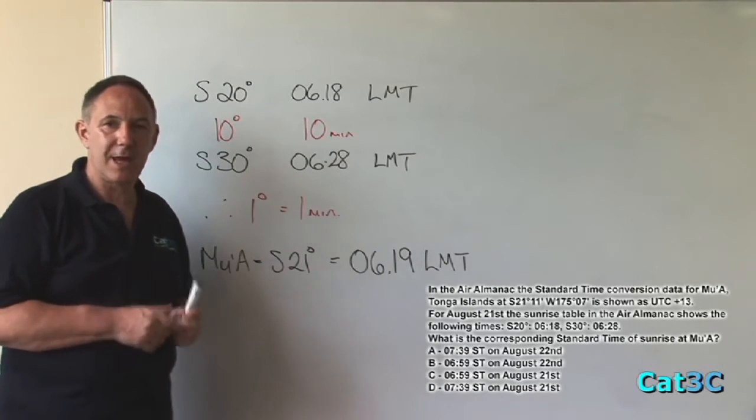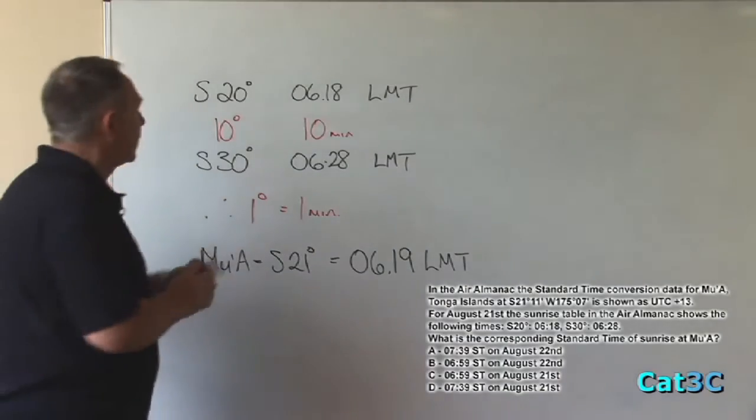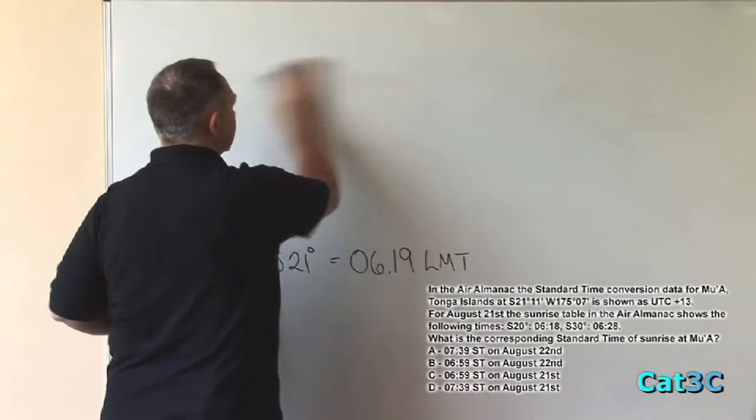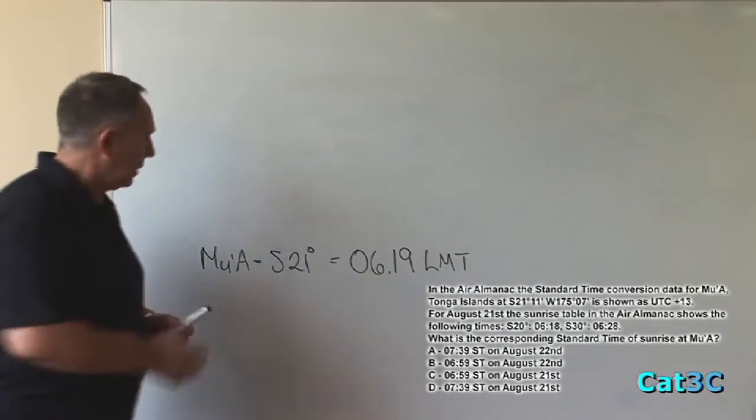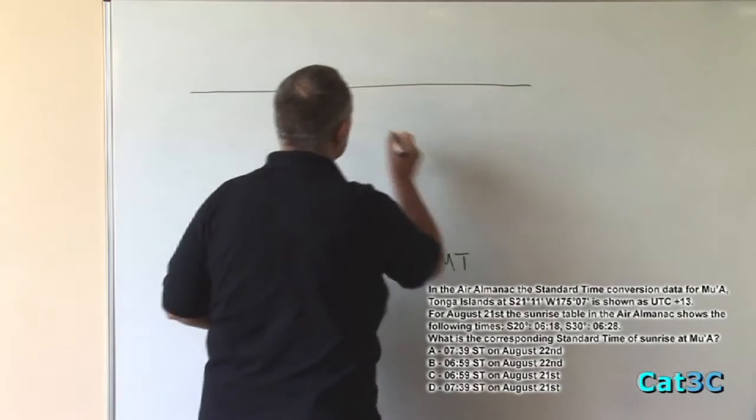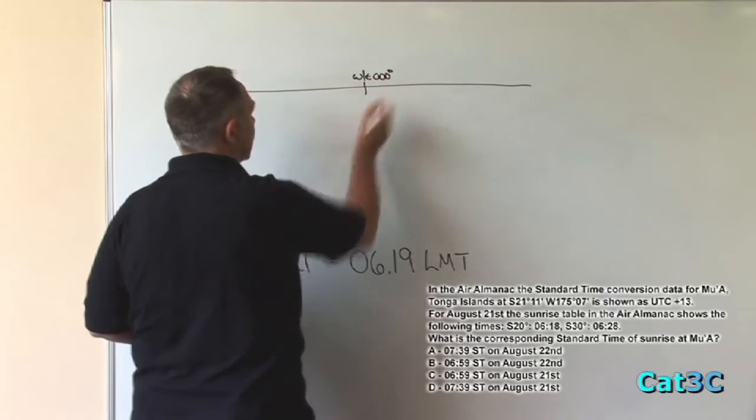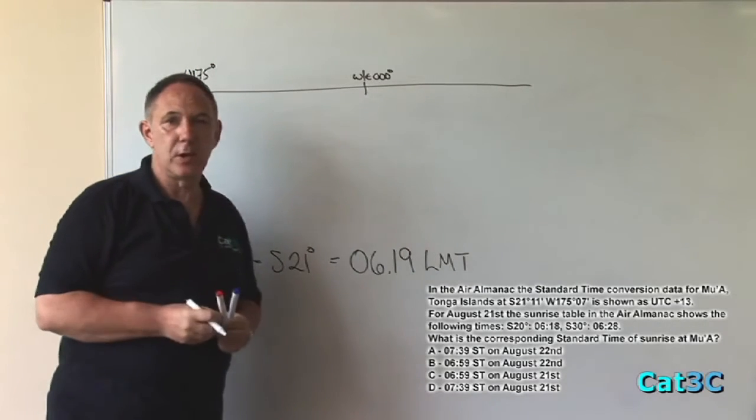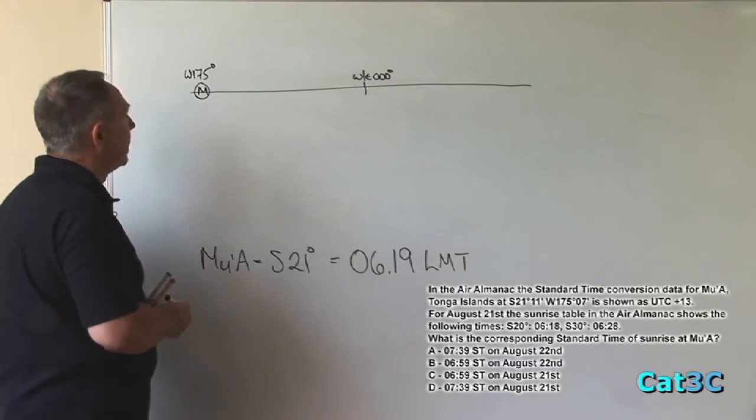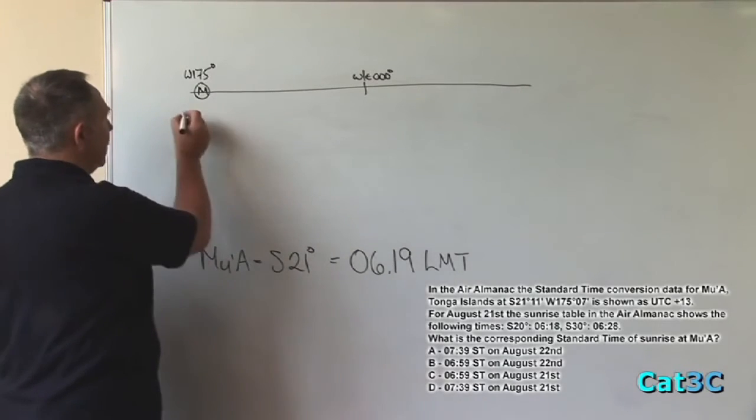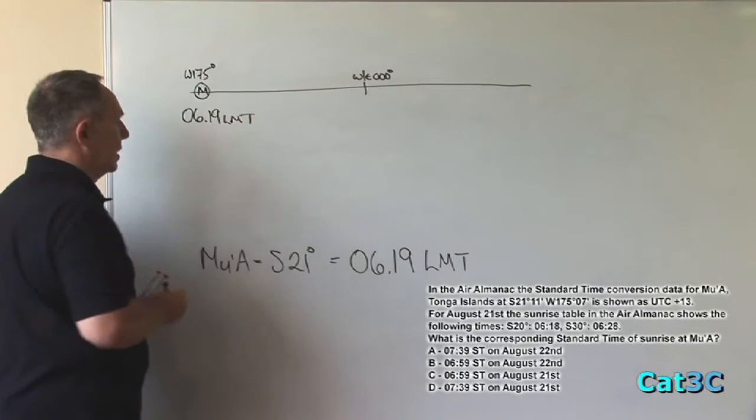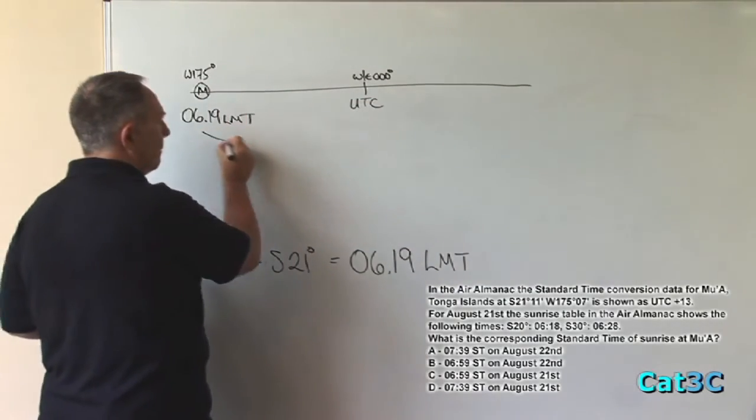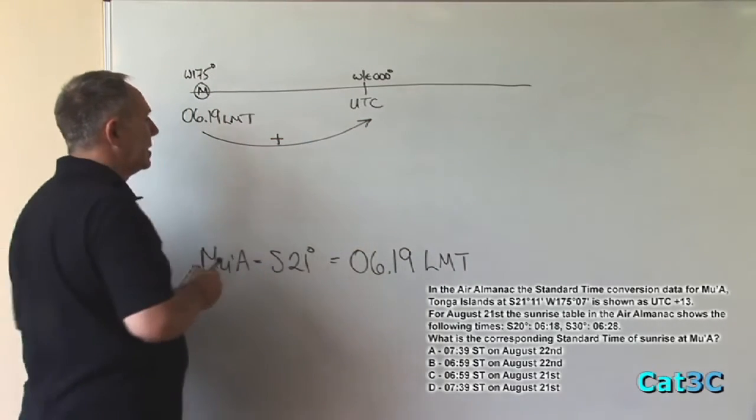And to do that, I'm going to clean this off. Drawing a timeline, putting the Greenwich Meridian, west east, 0, 0, 0 in the centre, and I'm going to mark Mua to the west at west 175 degrees. Again, you can ignore the odd 7 minutes. It will not make any difference to the final answer. We know the time of sunrise at Mua in local time is 0619 local mean time. What we have to do now is to convert it into UTC at the Greenwich Meridian by moving to the east, where we add the time difference on.